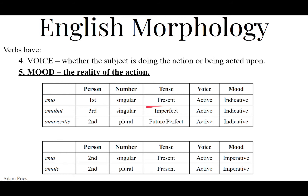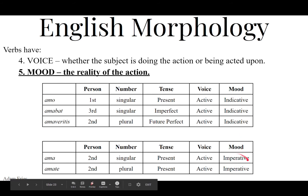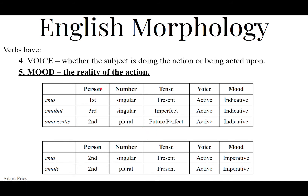Now mood — that's where we're at this chapter. Mood, or mode, is the reality of the action — that is, how real is the action. Up till now, you have only been introduced to the indicative mood. We're going to be focusing on the imperative mood in this chapter. So the five things each verb needs to have are: person, number, tense, voice, and mood.